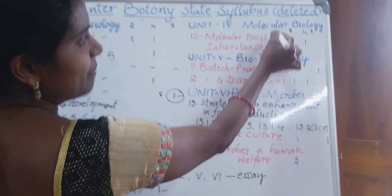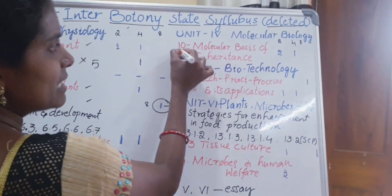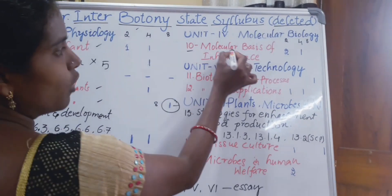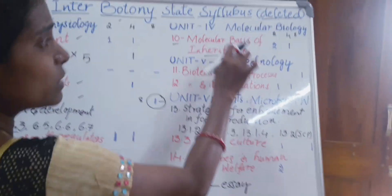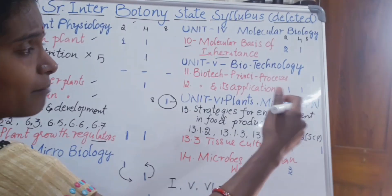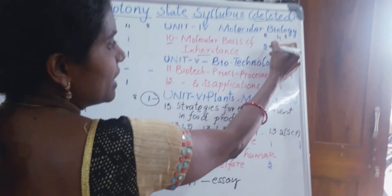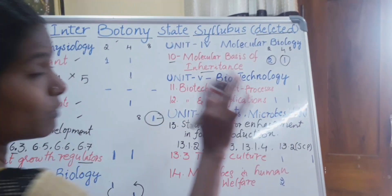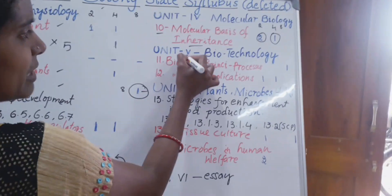Coming to the fourth unit, Molecular Biology. There is only a single chapter: Molecular Basis of Inheritance. Here you will learn how genetic material transfers from DNA to RNA. From this, one two-mark and one four-mark question will come, but there is no essay question from this unit.